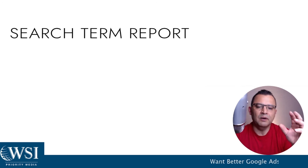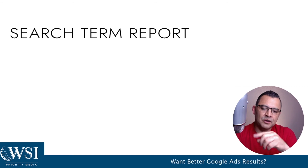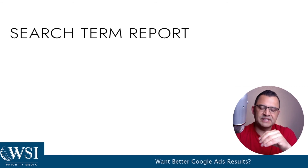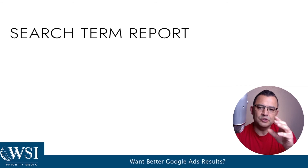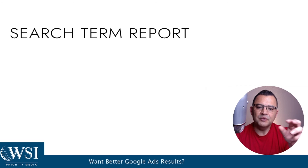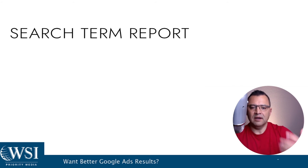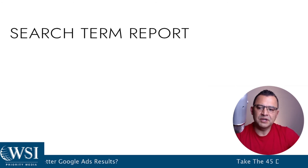Another place to pick up negative keywords is your search term report. Scroll down on the left side into the search term report in the keyword section. What I like to do is sort it by cost, so I can see how much money I'm spending on specific search terms and immediately start negative-keywording the ones that don't apply — so we can keep our conversions as high as possible. This is a whole part of your conversion optimization.